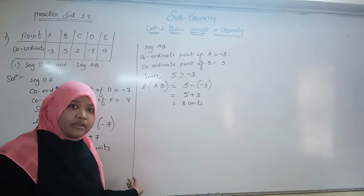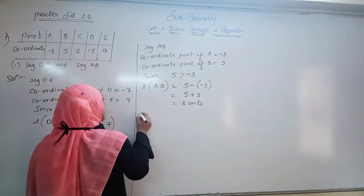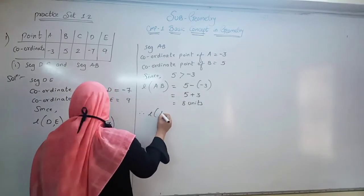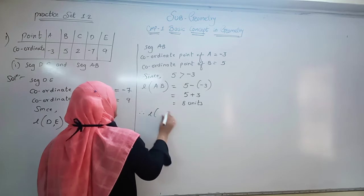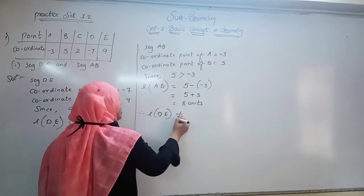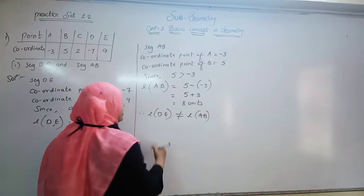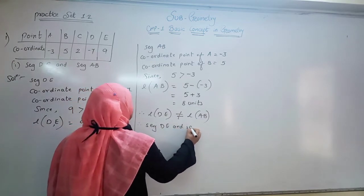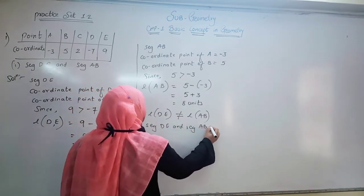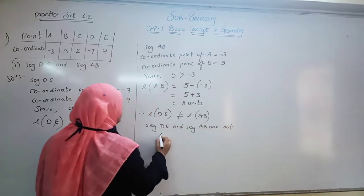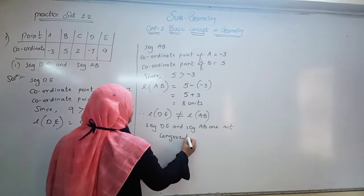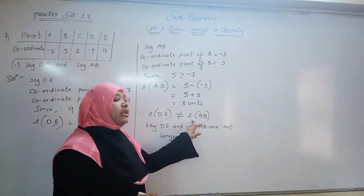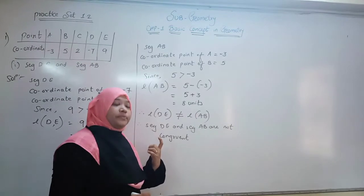Since the lengths are not equal, we write: length of DE is not equal to length of AB. Therefore, Segment DE and Segment AB are not congruent. If the lengths are not equal, then they are also not congruent.